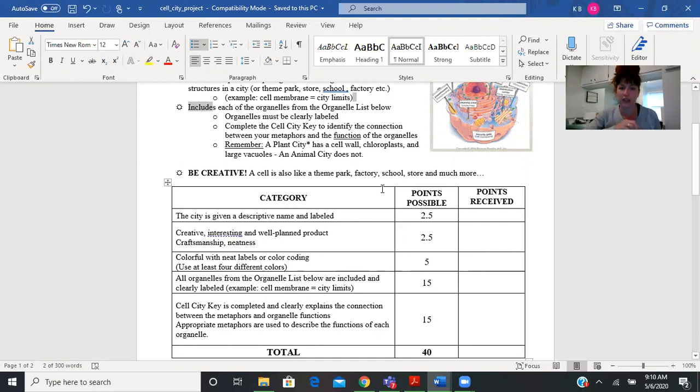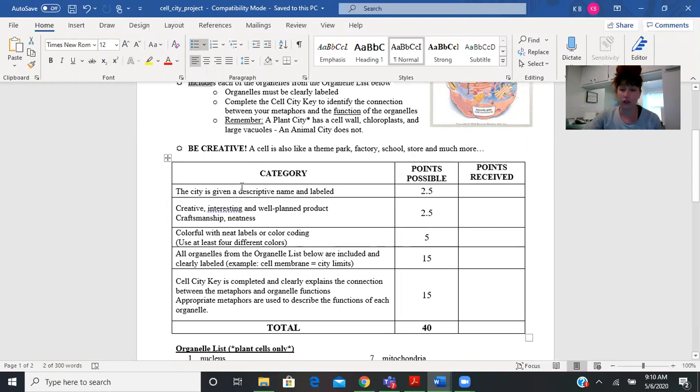It must be clearly labeled and there has to be a key so I need to be able to see what each thing stands for. This is the way you're going to be graded - you're going to be given two and a half points for the fact that your city has a name.